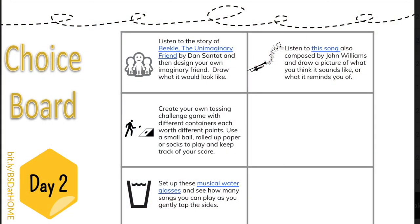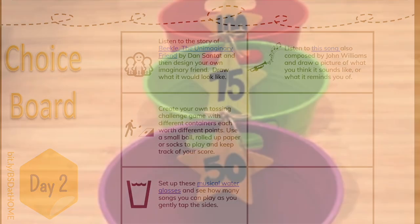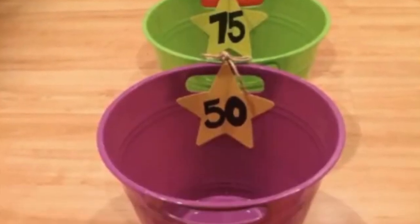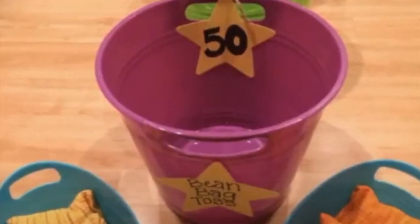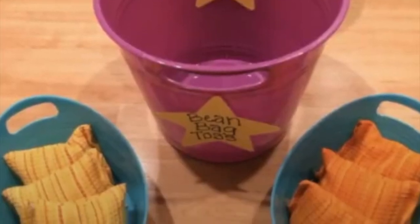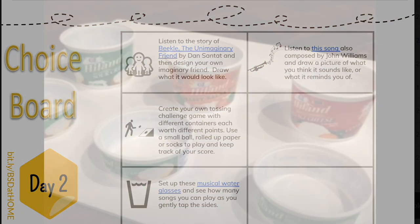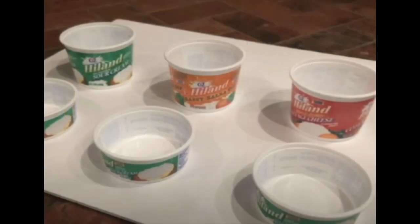Choice two: Create your own tossing challenge game with different containers, each worth different points. Use a small ball, rolled up paper, or socks to play and keep track of your score.